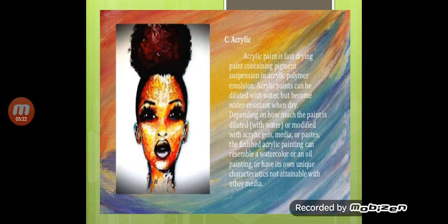After that, acrylic paints — as you know, they are fast-drying. Oil paint takes time to dry whereas acrylic paint dries quickly. It is better to apply acrylic first if you need to work fast, and then apply layers of oil on top. Acrylic paint is a fast-drying paint containing pigment suspension in acrylic polymer emulsion. Acrylic paints can be diluted with water but become water resistant when dry. Depending on how much the paint is diluted with water, it can resemble oil paint if less water is used, or a different consistency with more water.